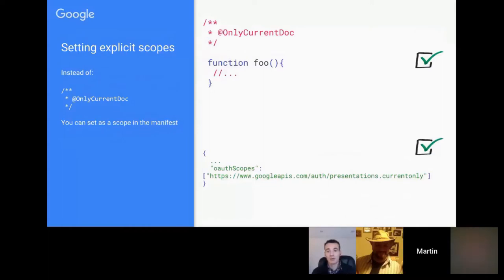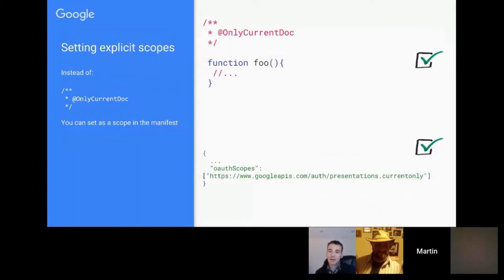One of the advantages of using 'only current document' is it avoids needing to go through the app verification process. I needed to implement this on one of my projects — a spreadsheet with a container-bound script that people copy. It's impractical to go through verification each time a copy is made, and since the script only needed to access the current document, including that scope avoids the app verification warning and keeps just the normal authentication flow.